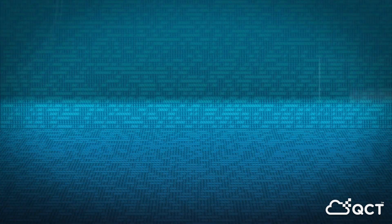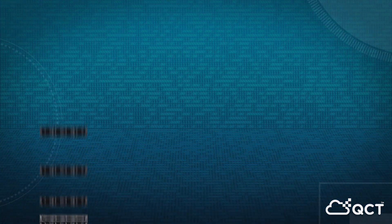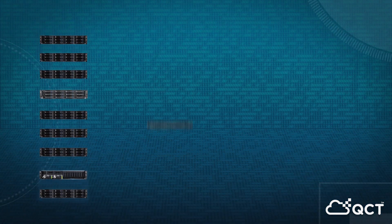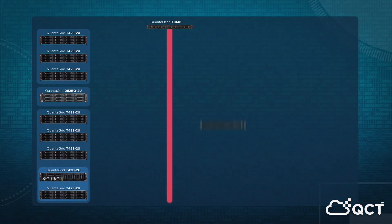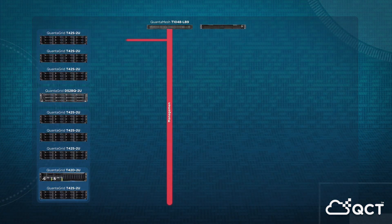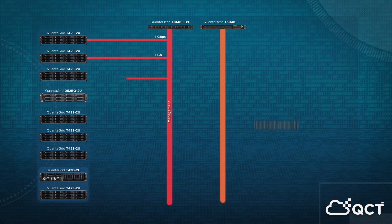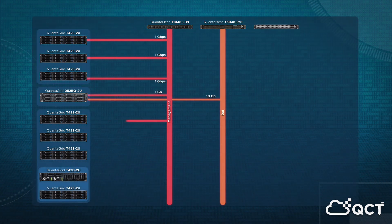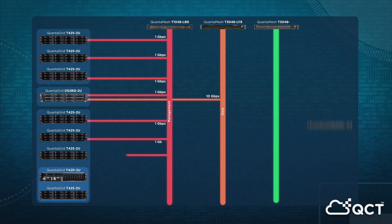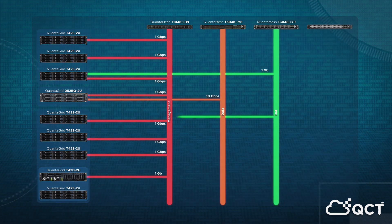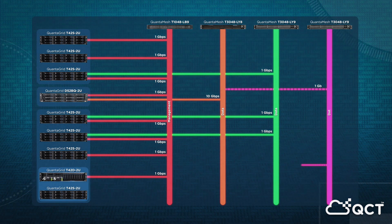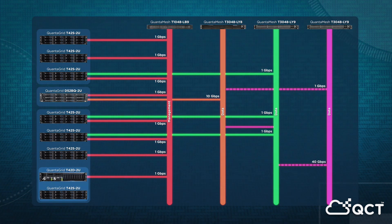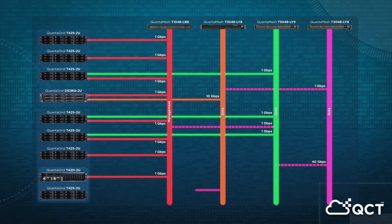RackGo R's device auto-discovery and location awareness features create an up-to-date schematic each time new devices are added or removed from the data center, allowing businesses to maintain an accurate overview of the network topology and make changes to infrastructure in real-time.